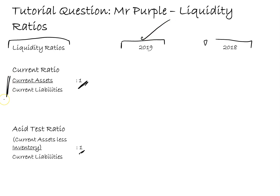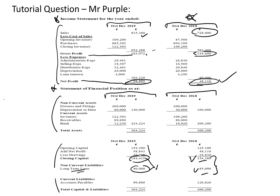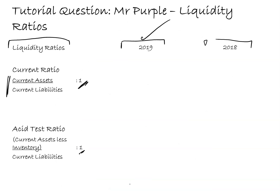For the 2019 current ratio, I'll find current assets and current liabilities in the statement of financial position. The total current assets figure is 224,224 and the total current liabilities figure is 99,809. So current assets 224,224 divided by current liabilities 99,809, expressed as something to one, works out at 2.25 to 1.